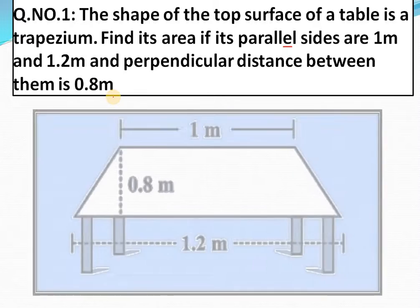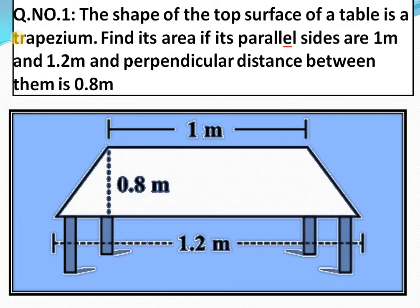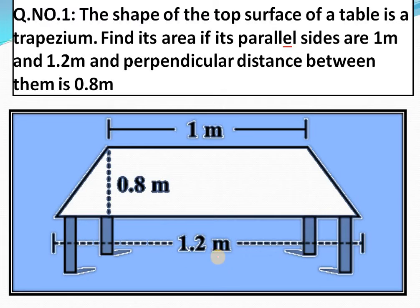हमारे पास एक table दिया गया है। Table की shape trapezium की shape में है। Trapezium की property क्या है कि उसके two sides parallel होते हैं। तो यह वाली side और यह वाली side parallel हैं। इस side की length 1 meter है और इस side की length 1.2 meter है और इसकी height 0.8 meter है। हमने इसका area निकालना है।